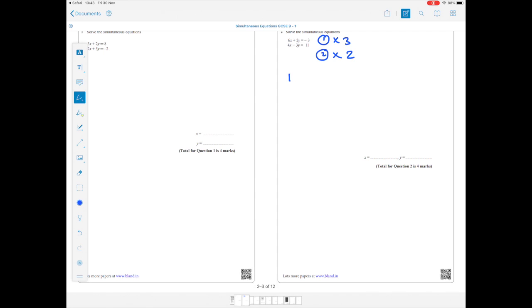So 6X times 3 is 18X plus 6Y, and then minus 3 times 3 is minus 9. 4X times 2 is 8X, minus 3Y times 2 is minus 6Y, and then 11 times 2 is 22. So we've got equations 3 and 4.